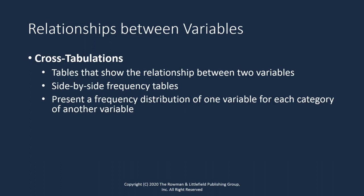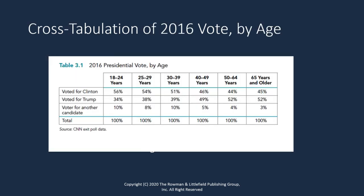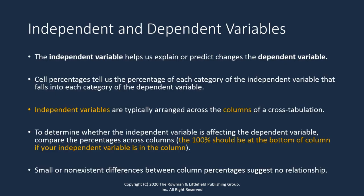First of all, you need to know which variable is your independent variable and which is your dependent variable. You need to be able to identify what you think is affecting your dependent variable. Then we create a cross-tabulation between those two. The second thing we need to understand when we do a cross-tabulation is where the percentages come from. Independent variables are the variables that influence the dependent variable — the independent variable helps us explain or predict changes in the dependent variable.